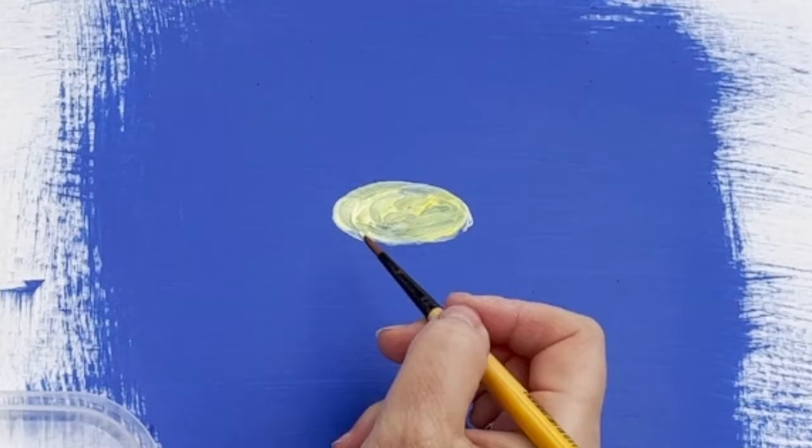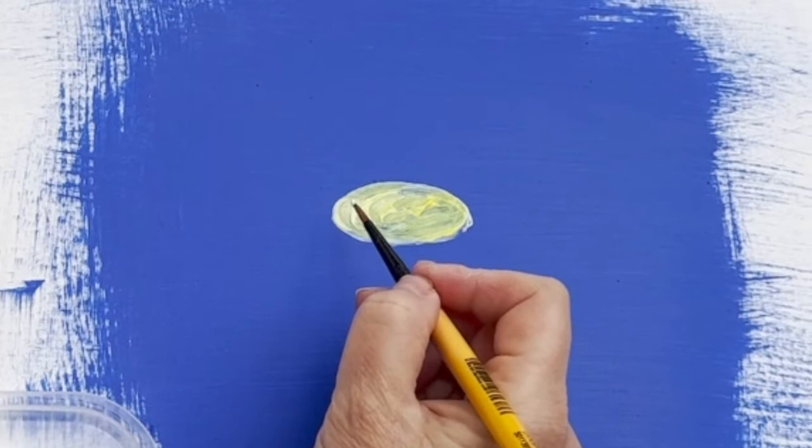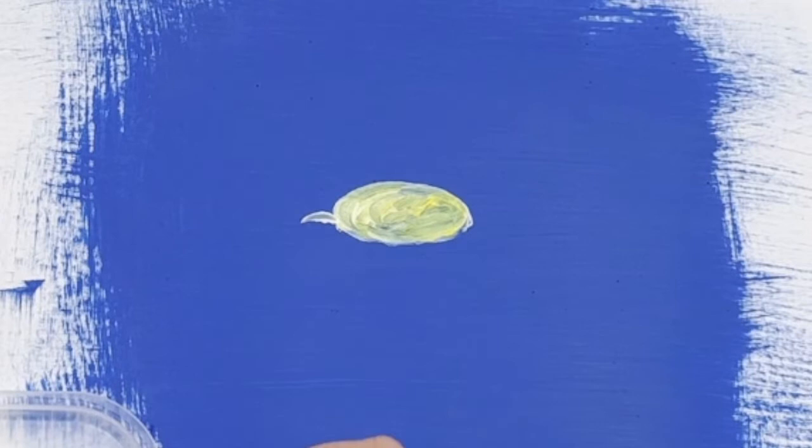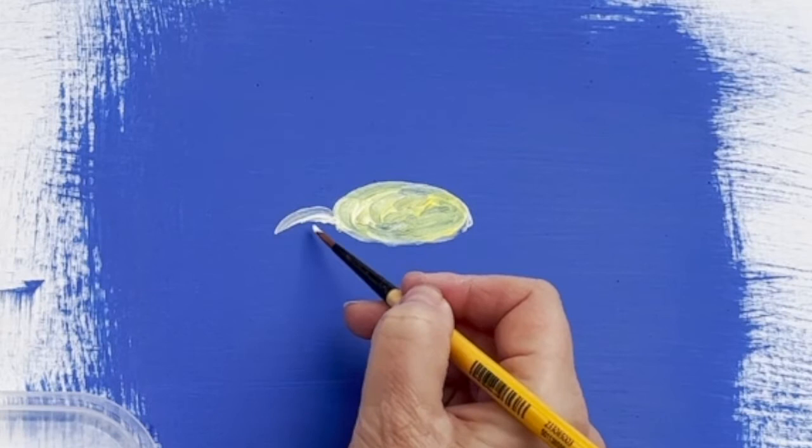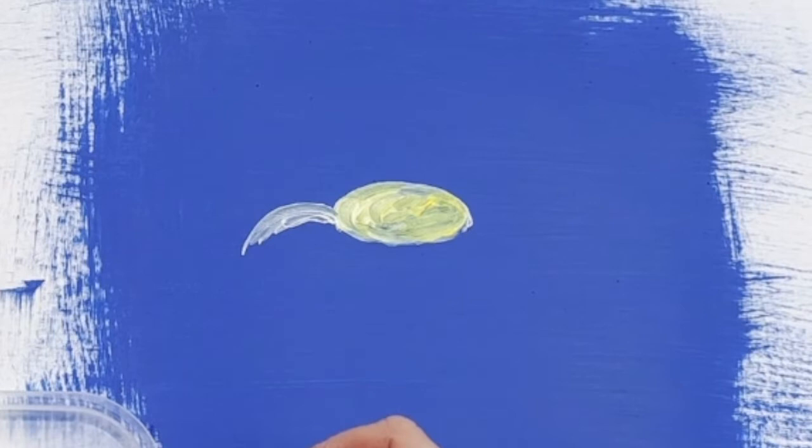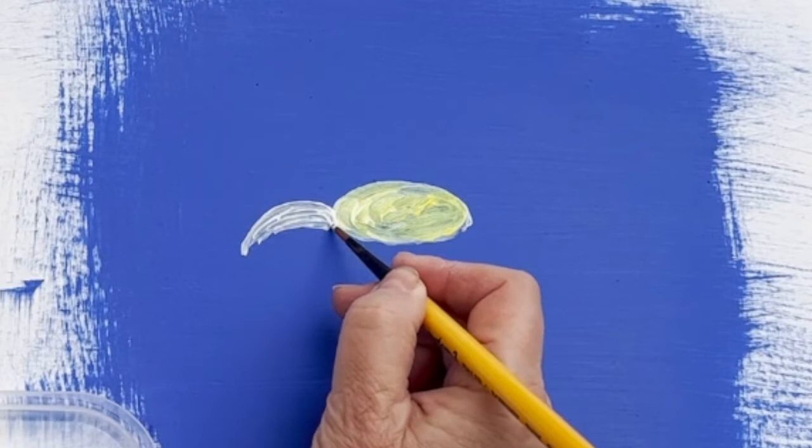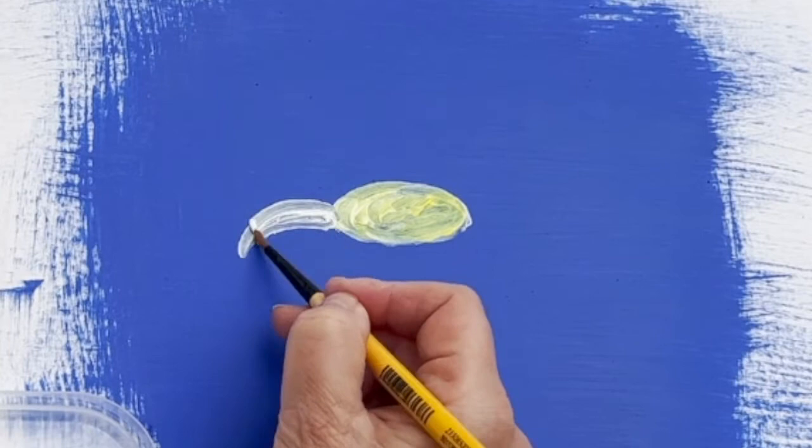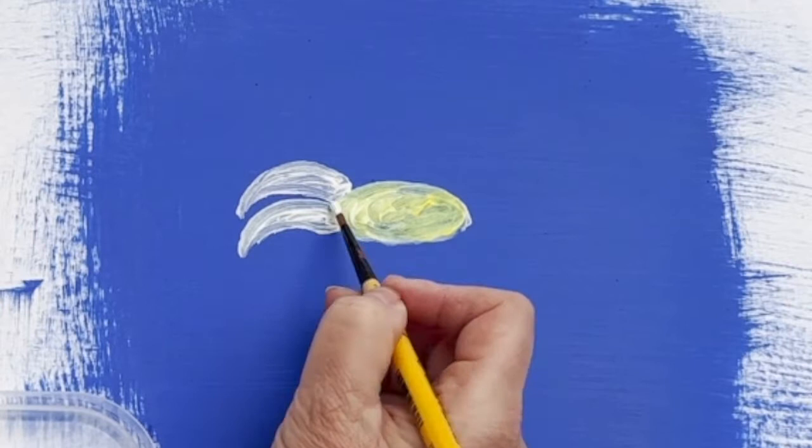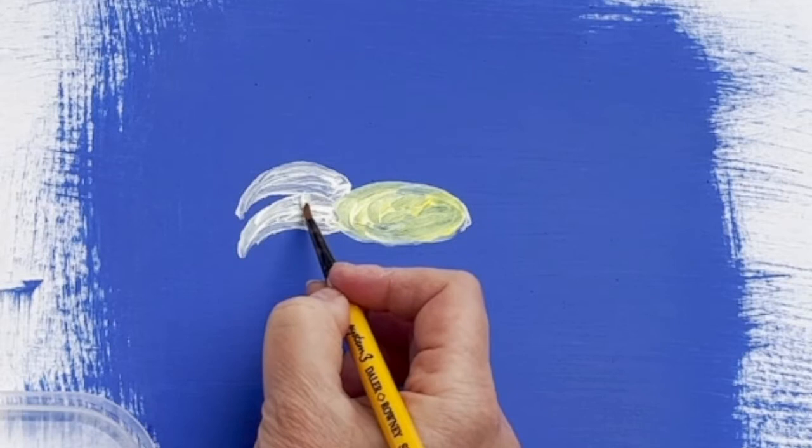Once I've got an oval shape that I'm happy with, I'm then going to start marking out where the outlines of the main petals of the daisy are going to go. Again, these will look quite patchy to begin with. The main petals are, in fact, just basic triangles, very roughly, and I'm going to keep adding to them until I feel that they're balanced.